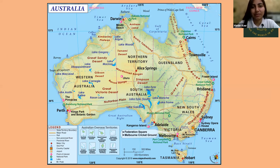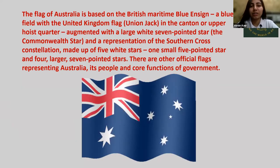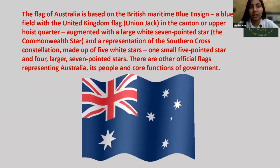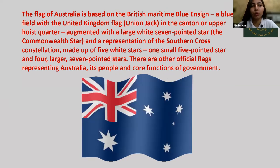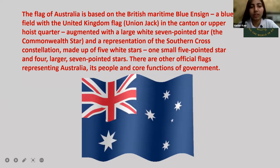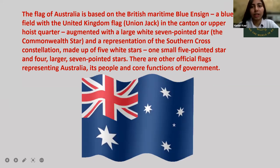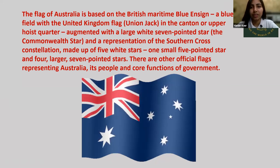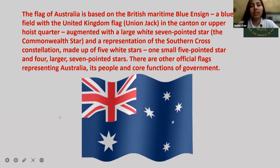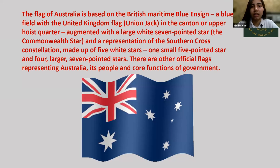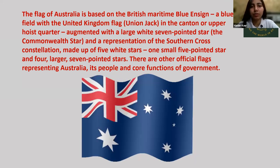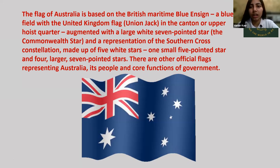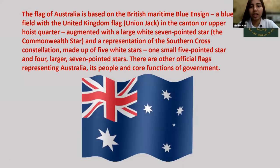Now talking about the flag — as Sreesia has made a wonderful flag, we will talk more about it. The flag of Australia is based on the British Maritime Blue Ensign: a blue field with the United Kingdom flag in the canton, the upper first quarter. Here you can see seven stars — these are the Commonwealth Stars, the seven-pointed stars. There is also a representation of the Southern Cross constellation, made up of five stars — one small five-pointed star and four larger ones. There are also other official symbols representing Australia's people and core functions of government.